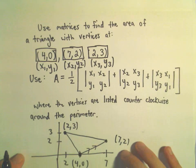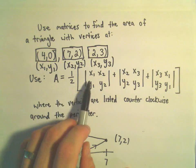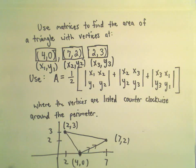The formula we use is the one here in the middle, this A equals one half, and then we have all the determinants. The vertices have to be listed in a counter-clockwise order around the perimeter.